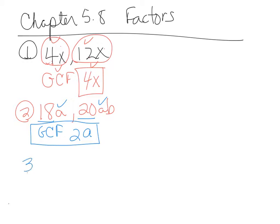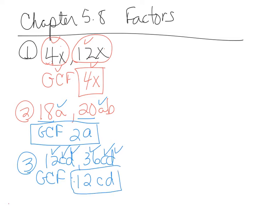And number 3 here, we're just moving on, and it's 12cd and 36cd. They want to know the greatest common factor. So what can I pull out of both? Well, I can pull a 12 out of both. 12 goes into 12 and 12 goes into 36. I can also pull a c, because there's a c in both, and I can also pull a d in both. So the greatest common factor for these two monomials is 12cd.